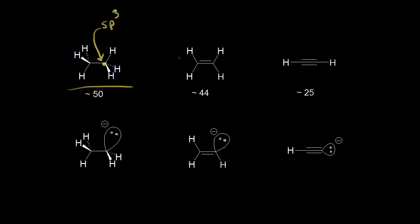Let's say that ethane donates this proton. The electrons in magenta are left behind on that carbon to form the conjugate base. This carbon is sp3 hybridized, which means the electrons in magenta occupy an sp3 hybrid orbital. An sp3 hybridized orbital has 25% s character and 75% p character.